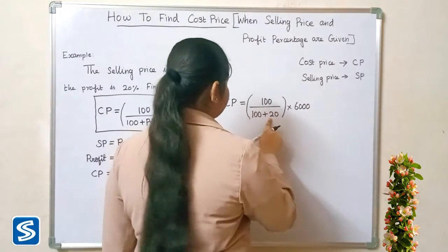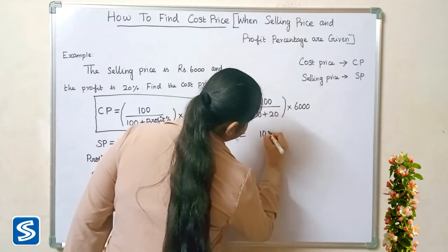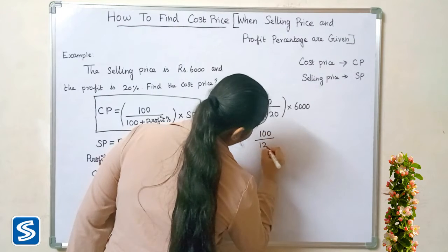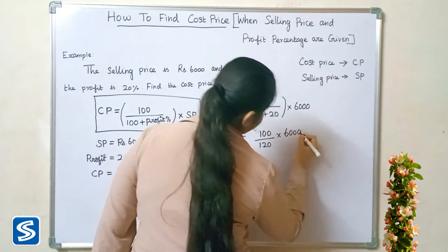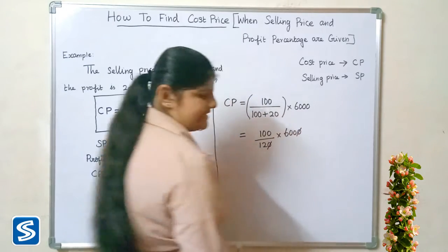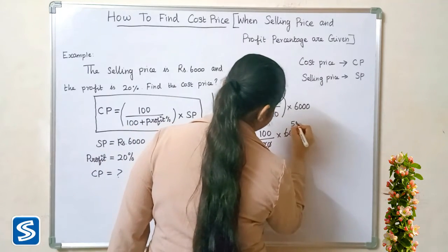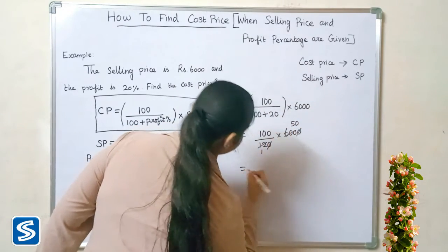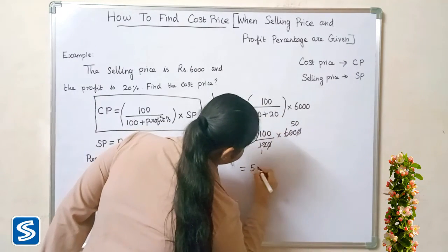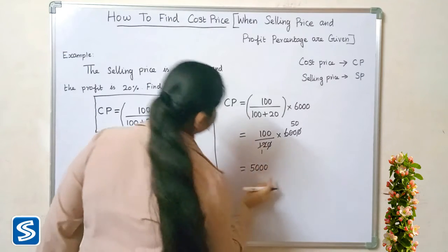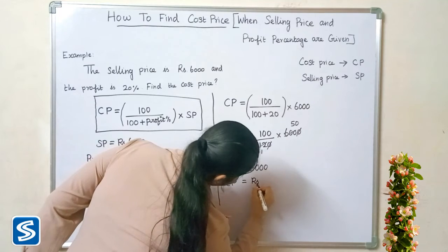100 plus 20 is 120, so we have 100 divided by 120, multiplied by 6000. Simplifying, the zeros cancel and we get 100 multiplied by 50, which equals 5000. So cost price is equal to rupees 5000.